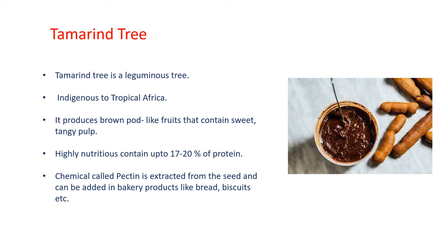Tamarind is a leguminous tree having edible fruit and it is indigenous to tropical Africa. The tamarind tree produces brown pod-like fruits that contain a sweet tangy pulp which is used in various cuisines around the world.